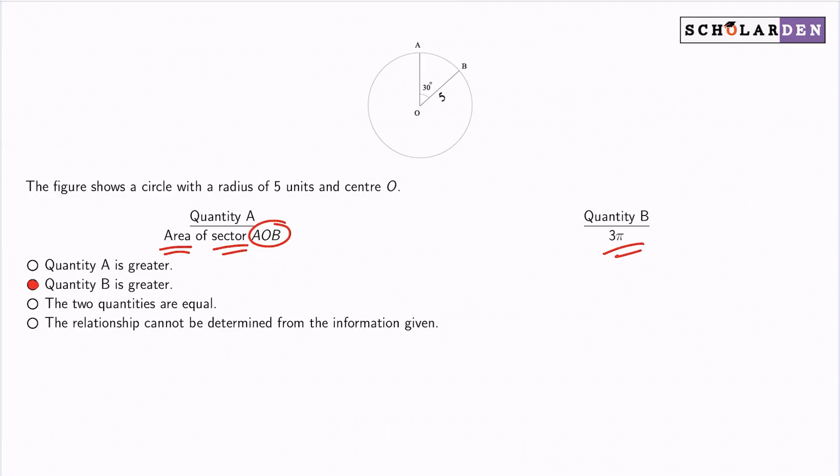So notice the circle here. In this circle, I want you to see that the sector AOB is this section right here. That's the section we're discussing. And so we want to find its area.